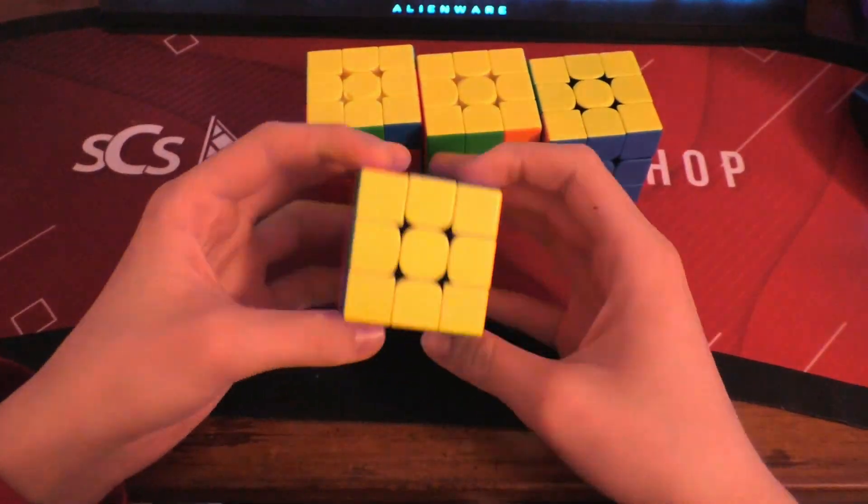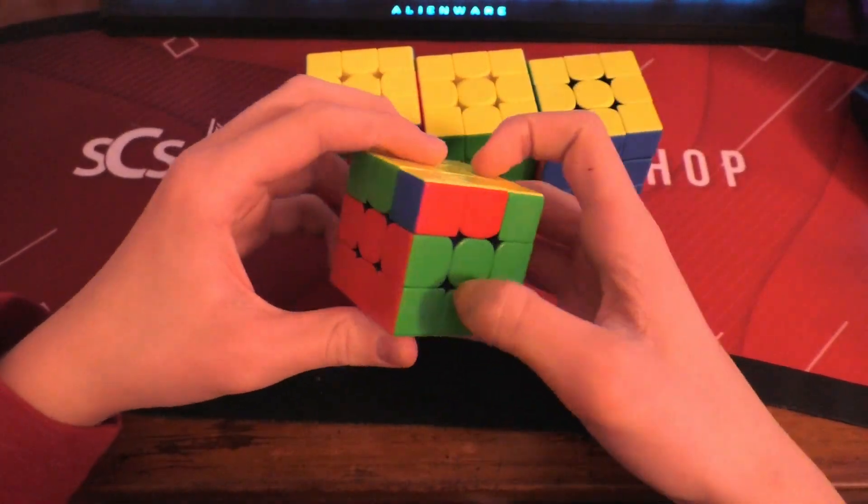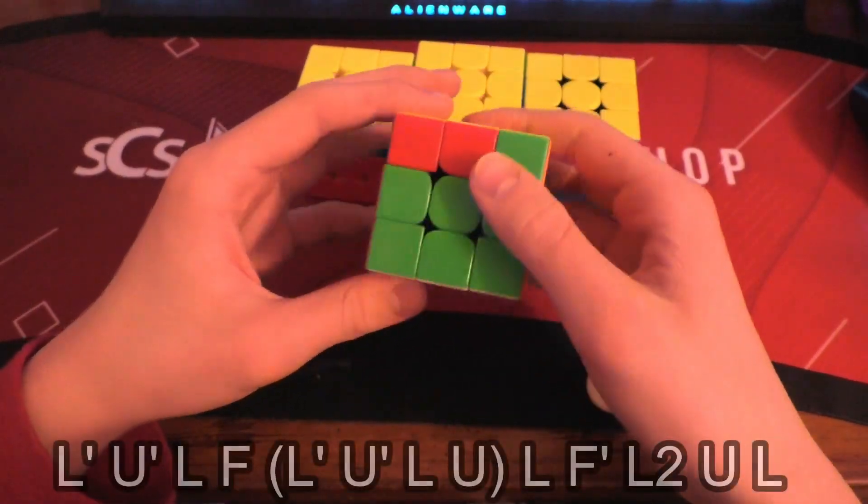Hey guys, it's Ben the Cube here, welcome back to another video. Today I'm going to be showing you guys the JA perm from every single angle. And here's the first case, which I guarantee that a lot of you are familiar with, and it goes like this.